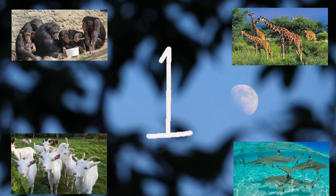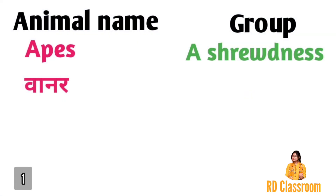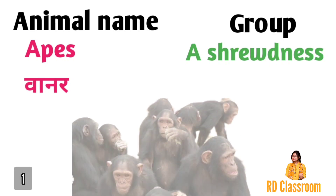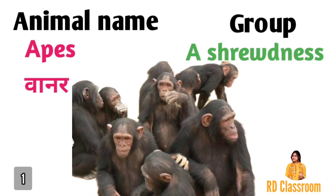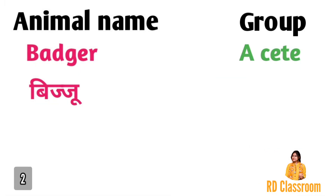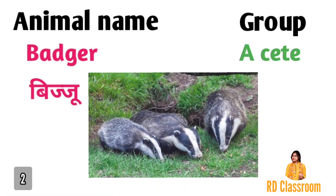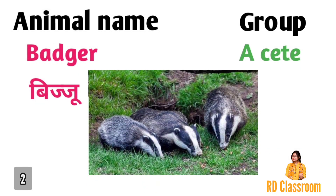Number one is apes, ya fir bandar, jiske group ko kahenge a shrewdness. Number two is badger, ya fir bijju, jiske group ko kahte hai a cete.